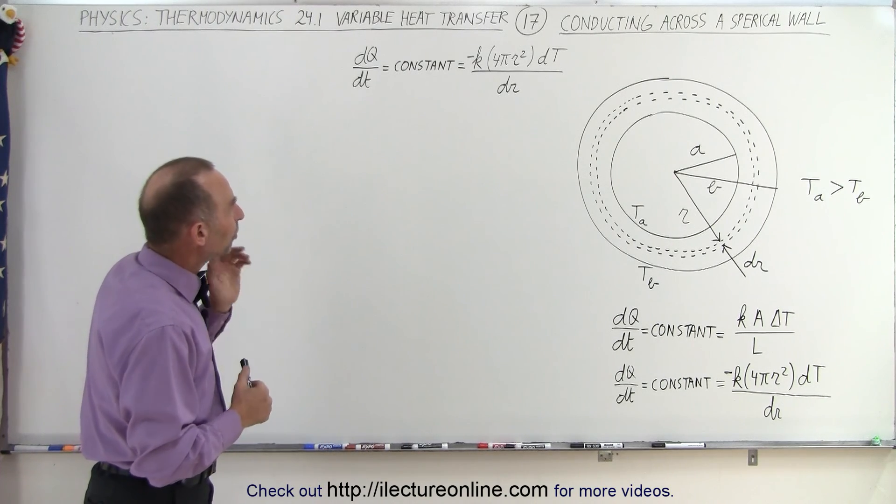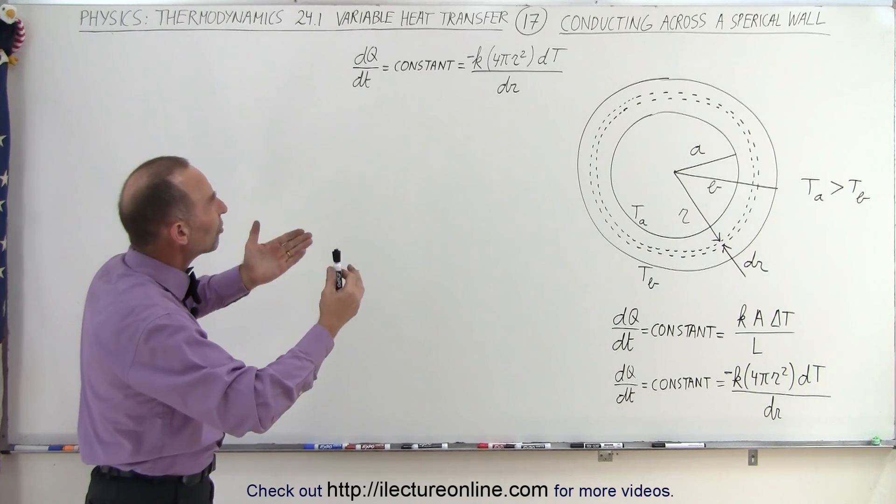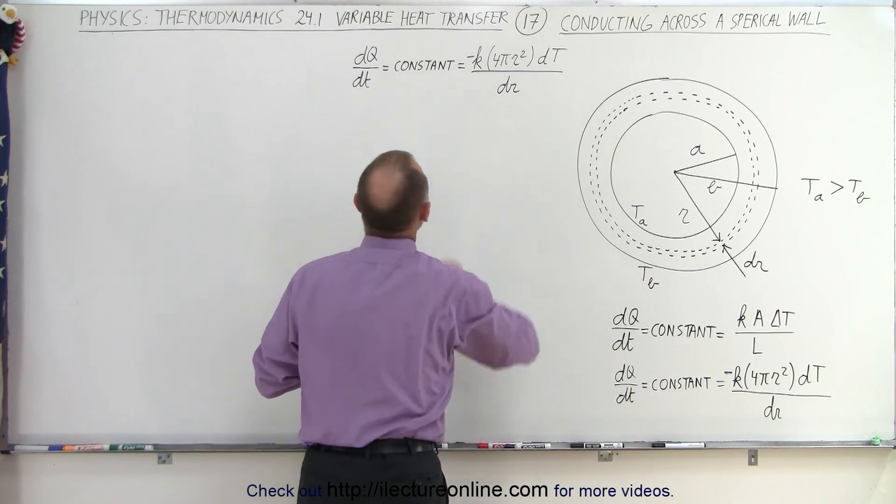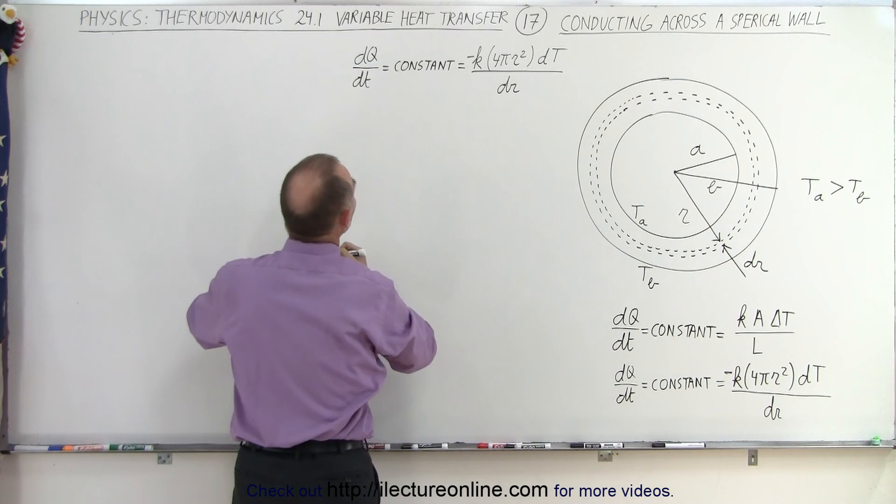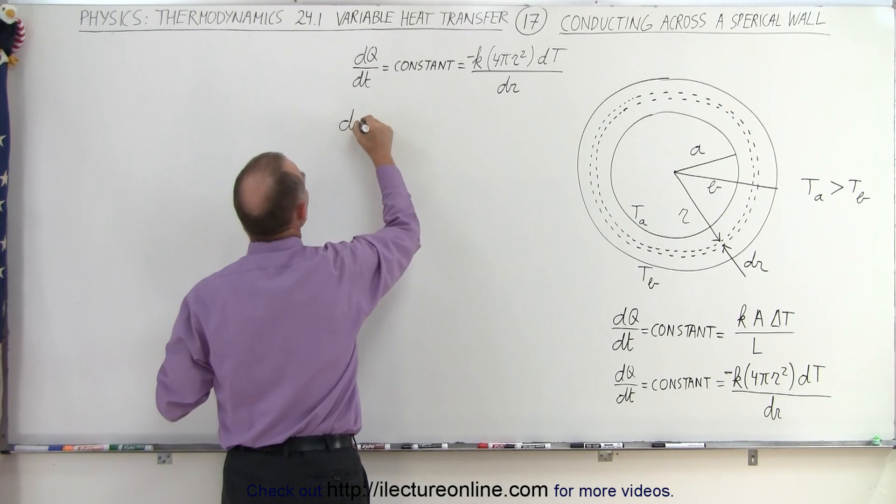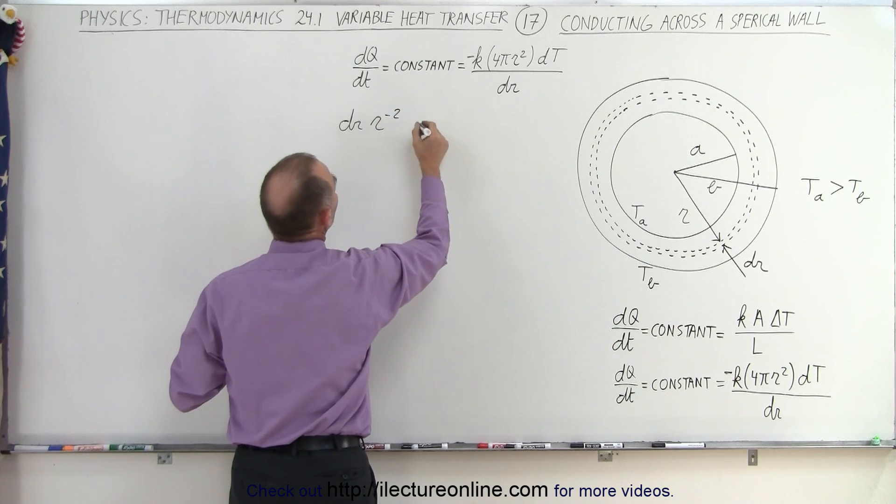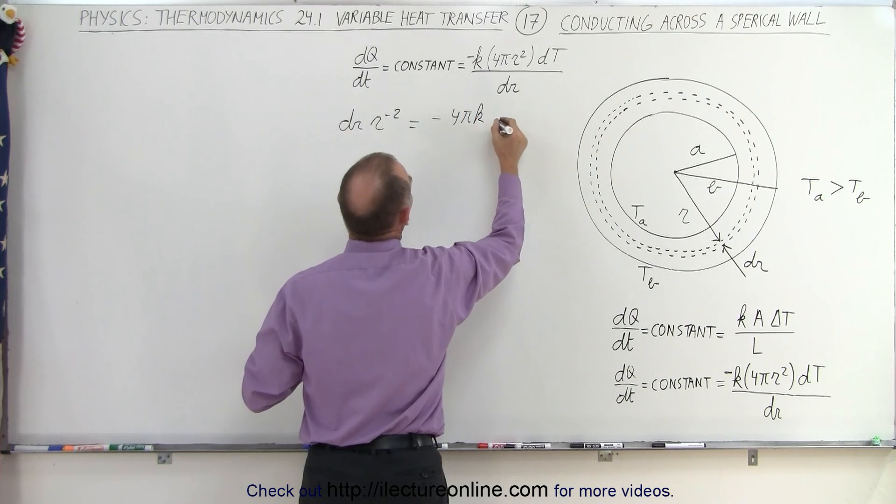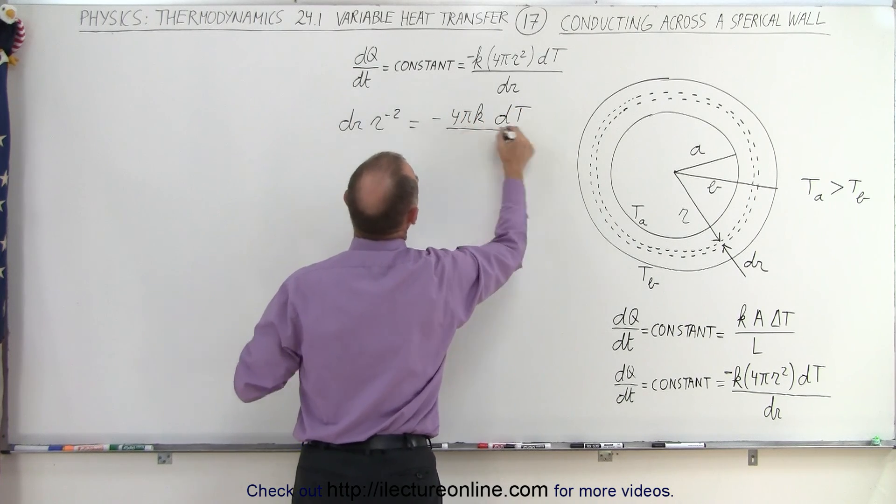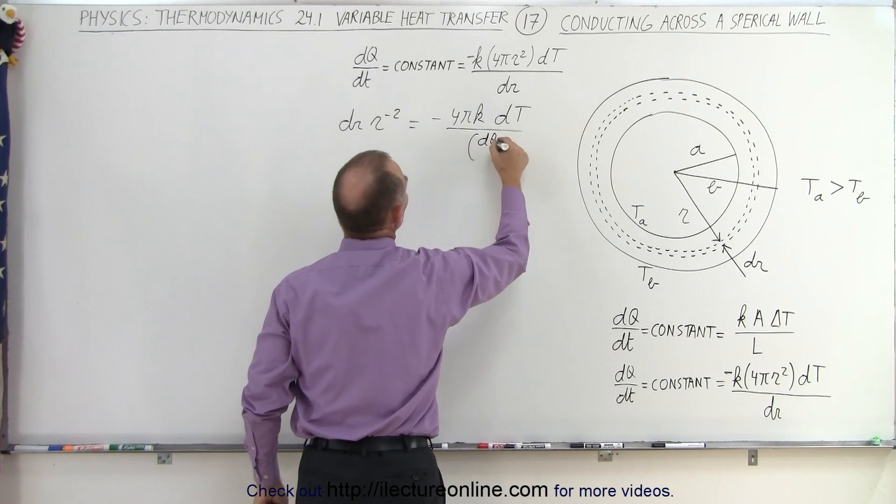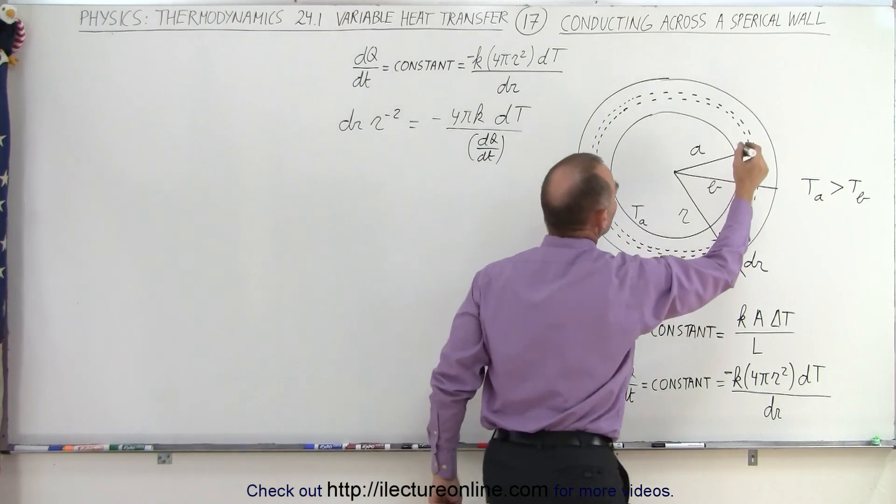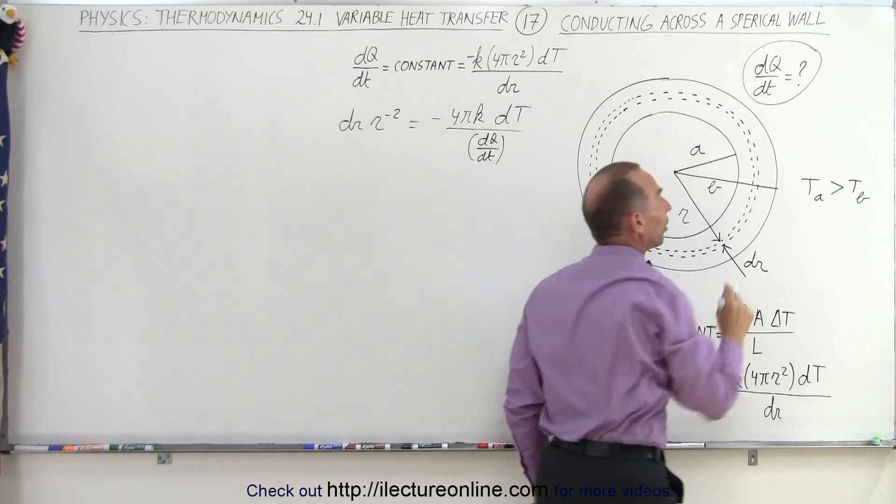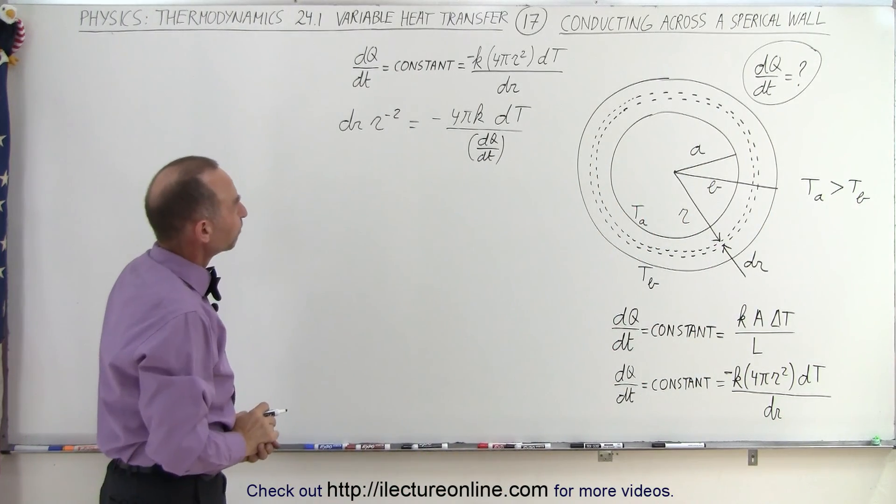Now let's plug in what we know into an equation that we can integrate. In other words, we want to separate the variables. We want to put the R's on one side and the dT on the other side. Remember that this is a constant quantity, so that means that we have a dr times an R to the minus 2 power, which is equal to the negative 4πK times dT divided by the dQ/dt, which is ultimately what we're solving for. We want to know what dQ/dt is. That's ultimately what we're trying to figure out.